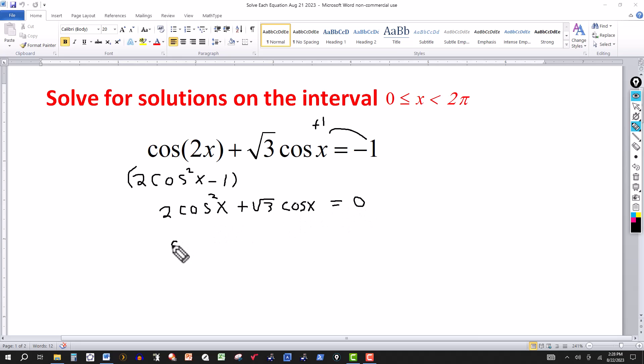So I can factor the left side, take out a cosine of x, leaving with two cosine x plus the square root of three. And that's equal to zero.